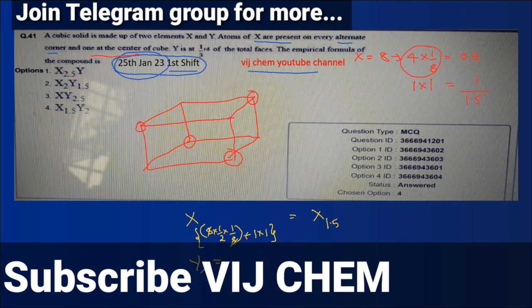So total surfaces will be 6 and 6 one third will be 1 by 3 and contribution also 1 by 2, so Y will be 1. So answer will be X 1.5, Y will be 1.